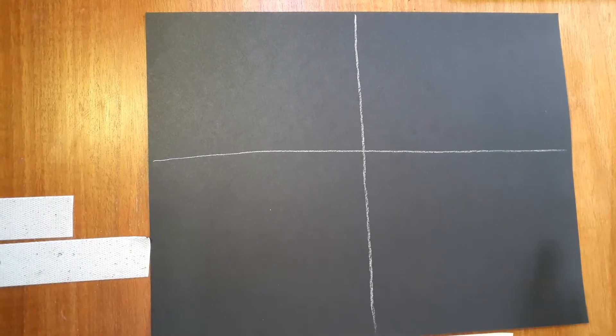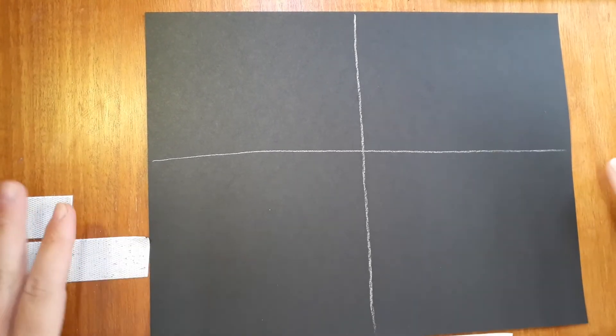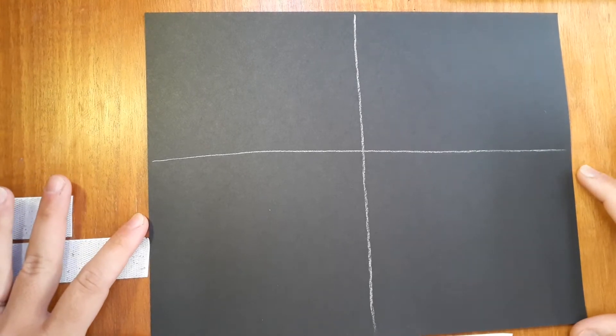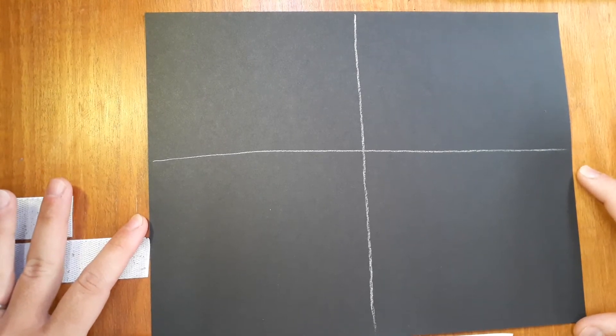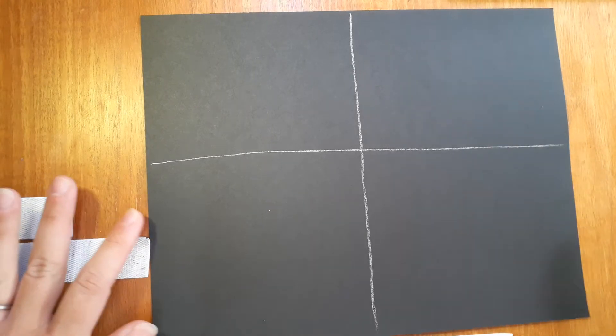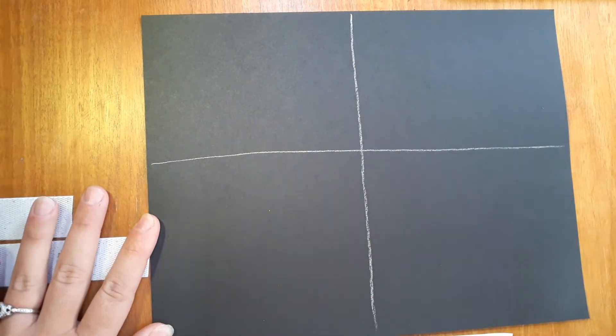For our charcoal lesson today, I want you to start by taking your black paper and holding it horizontal, so that is not up and down but kind of side to side, and then I want you to split it into four sections, four big sections.